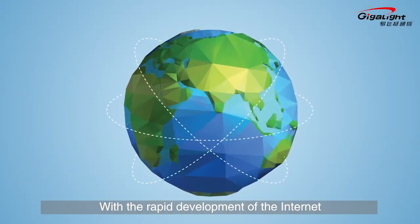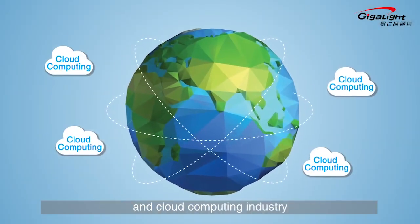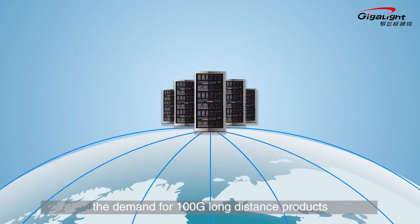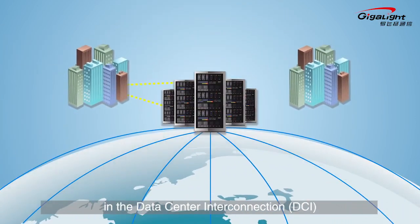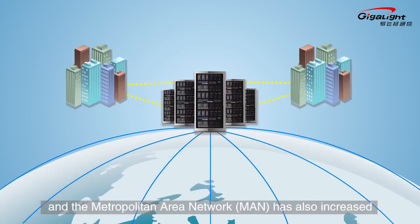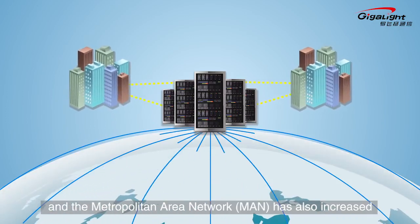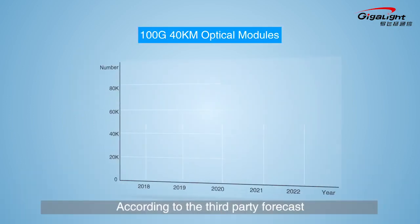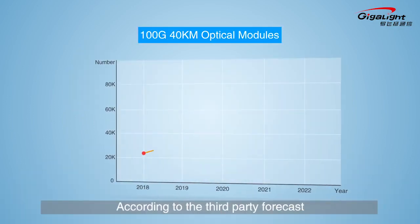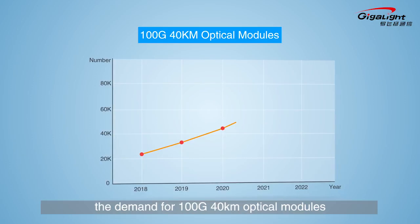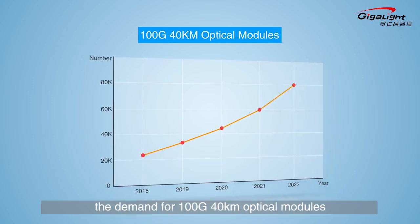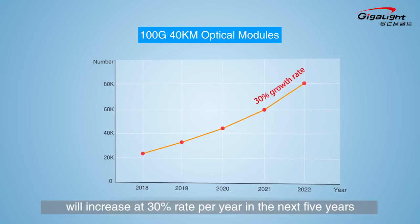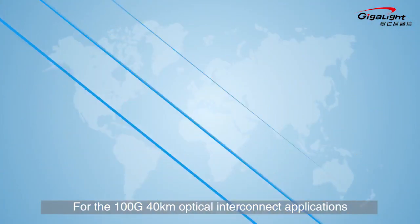With the rapid development of the internet and cloud computing industry, the demand for 100G long-distance products in the data center interconnection and the metropolitan area network has also increased. According to third-party forecasts, the demand for 100G 40-kilometer optical modules will increase at a 30% rate per year in the next five years.